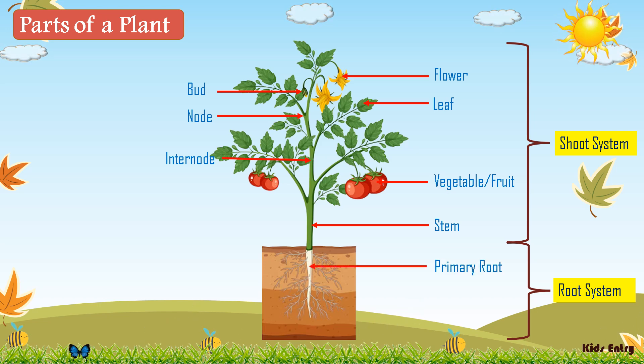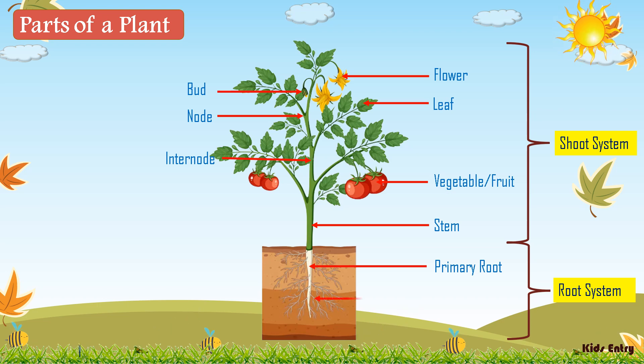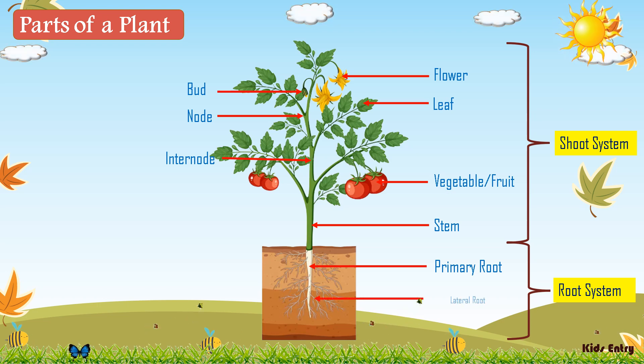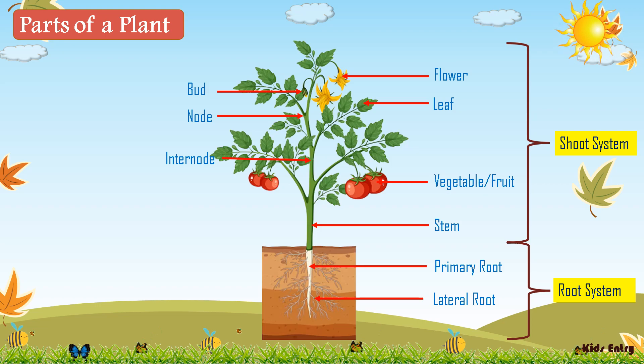The parts of the root system are: Primary root and Lateral root.